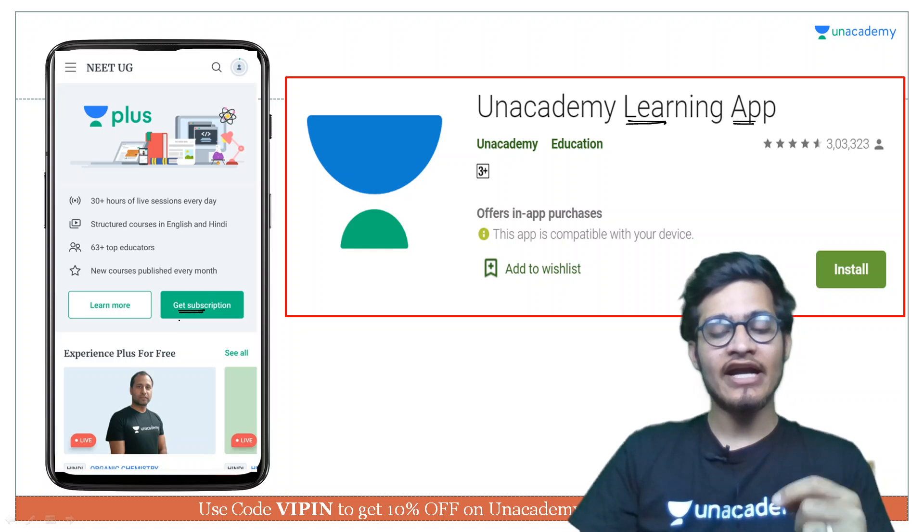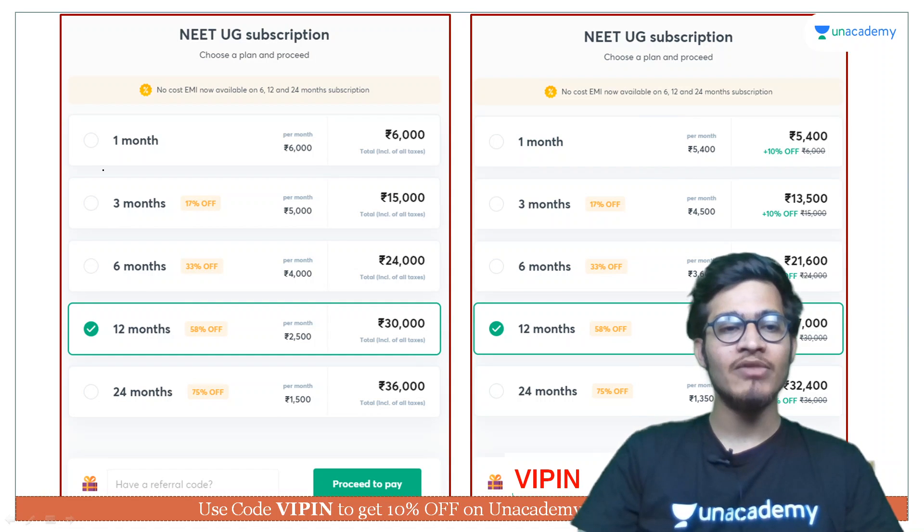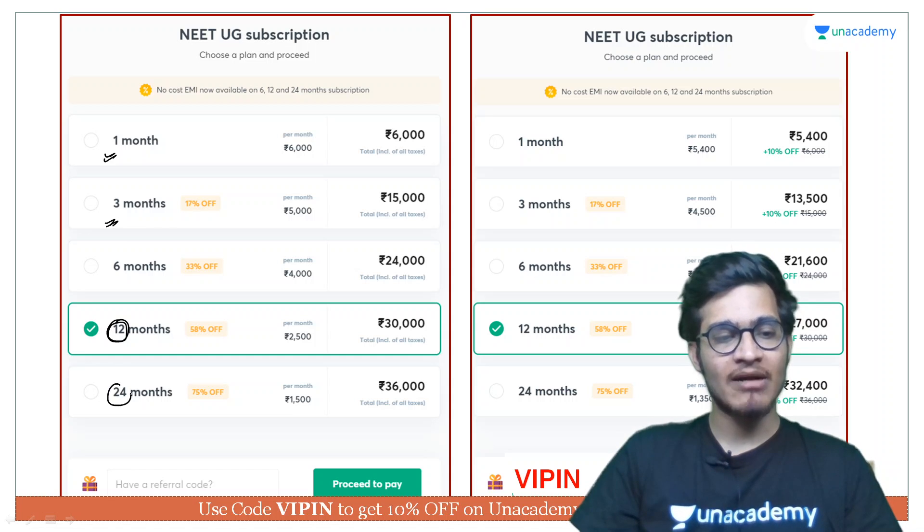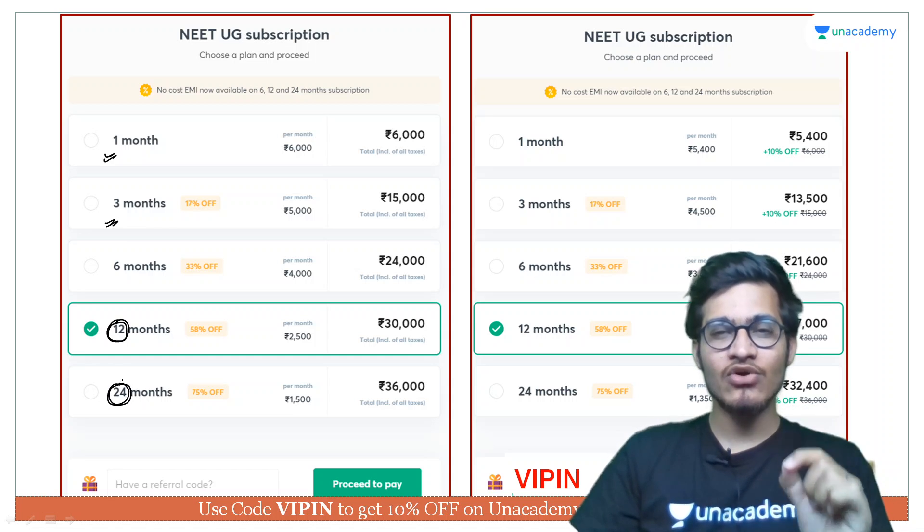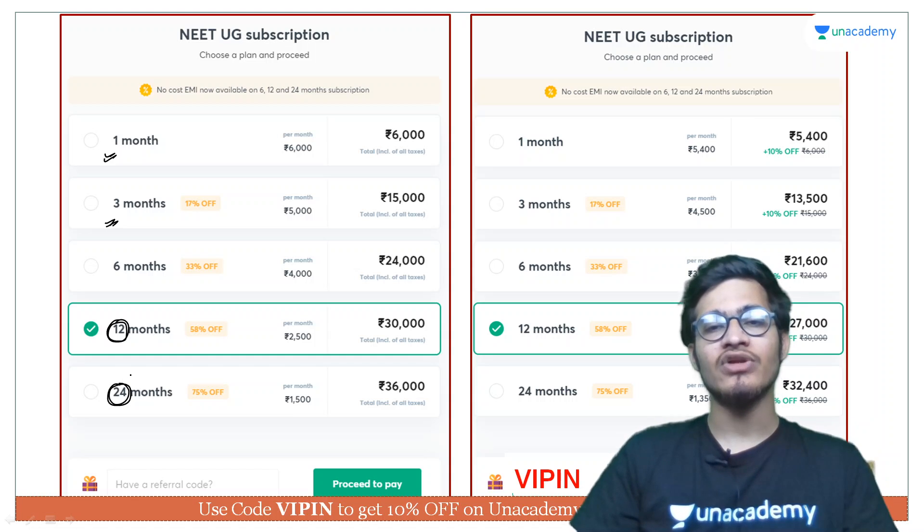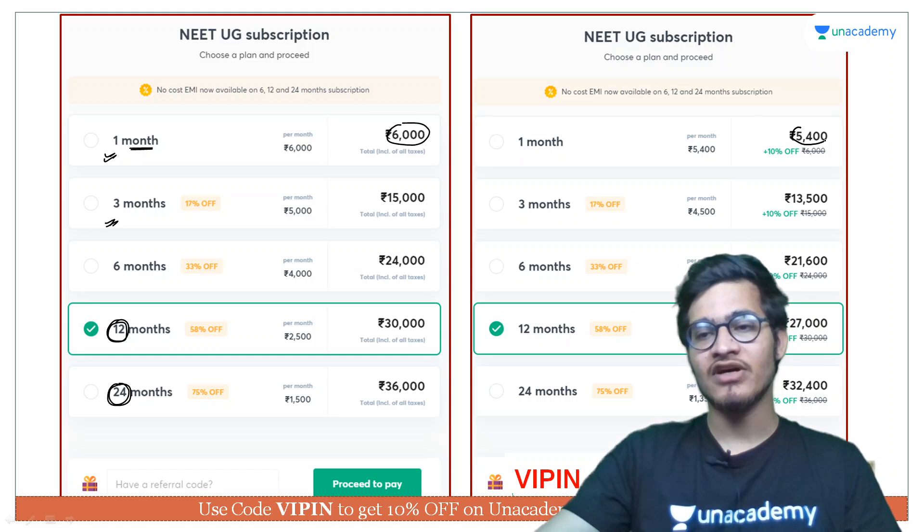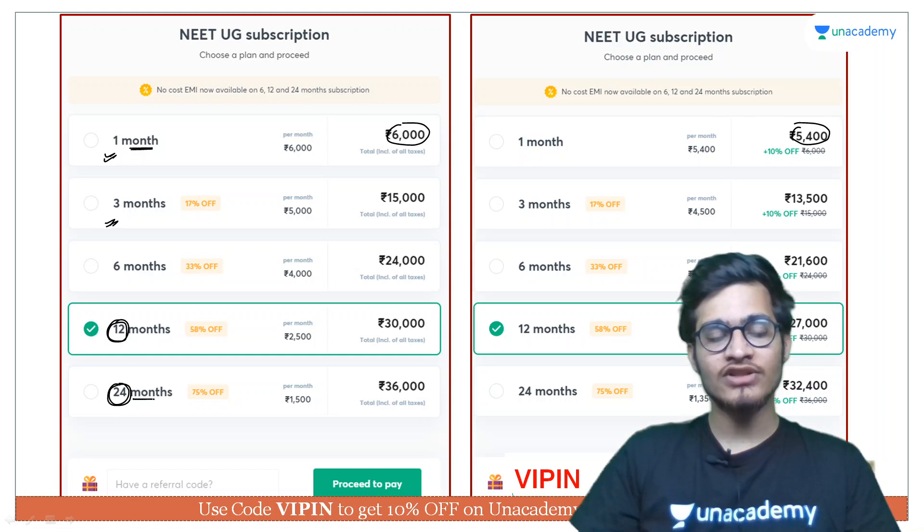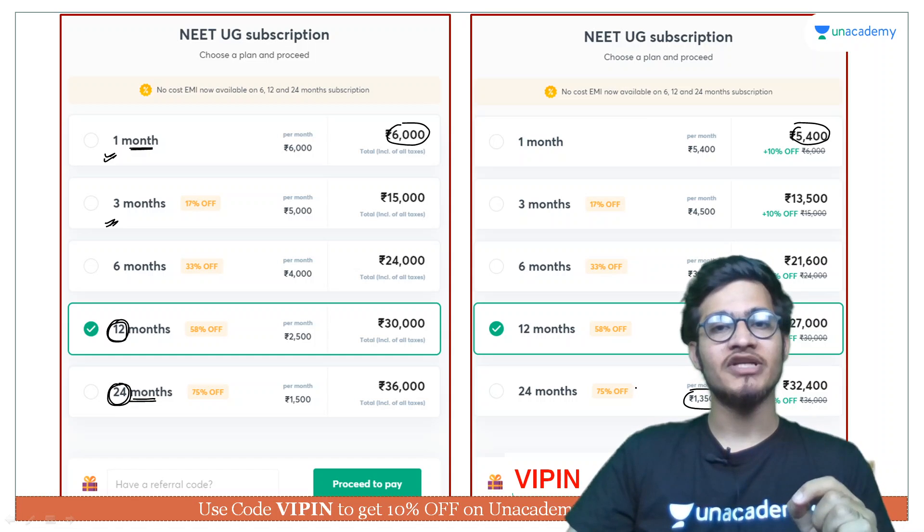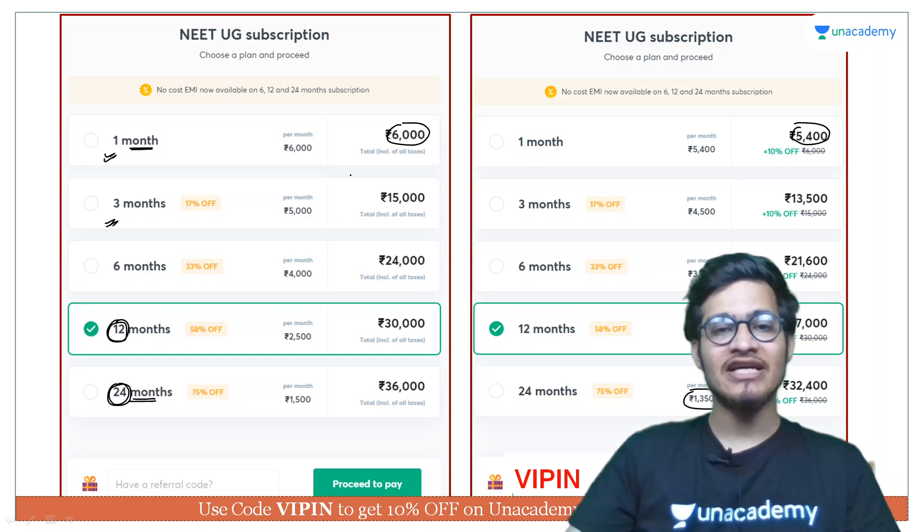After downloading this app you can go to the get subscription column and aap apne pasandida pack ko yahaan par choose kar sakte hain. I'll recommend you guys ki aap ek saal ya do saal ka pack yahaan se uthayen because they are going to be much cheaper as compared to the initial packs. Kyunki yahaan par one month cost aapko 6000 rupaye ke aas paas ki padti hai aur discount ke baad 5400, but agar aap 2 saal ka pack lete hain to aapko ek mahine ki cost sirf 1350 rupaye which is like five times lesser than this cost.